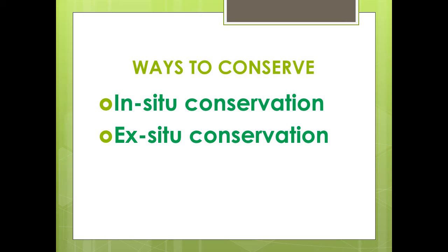There are two broad ways to conserve biodiversity: in-situ conservation and ex-situ conservation. In-situ conservation is the conservation of species within their natural habitat, where the natural ecosystem is maintained and protected. It is a cost-effective and convenient method, allowing a large number of organisms to be conserved simultaneously. Since organisms are in a natural ecosystem, they can evolve better and adjust to different environmental conditions.